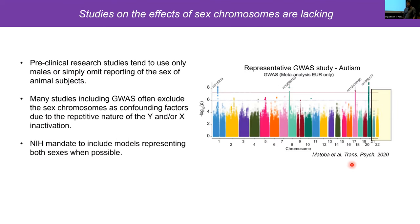Despite all this, studies including sex chromosomes and sex differences are generally lacking. Preclinical research often uses only males or simply omits reporting the sex of subjects. Many studies, including GWAS studies, exclude sex chromosomes as confounding factors due to X inactivation and the repetitive nature of the Y — for example, this GWAS on autism doesn't include sex chromosomes. Recently, the NIH has mandated that grants include both sexes when possible, illustrating the need for more studies incorporating sex chromosomes as important biological factors.